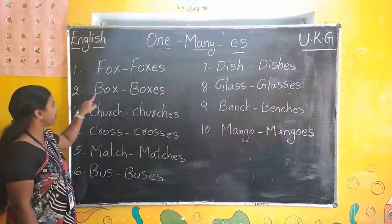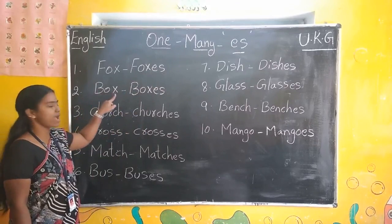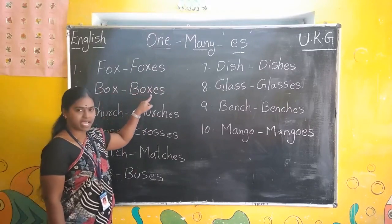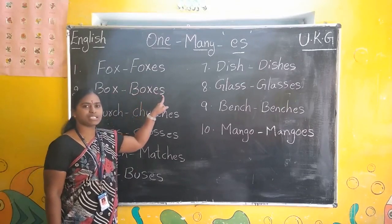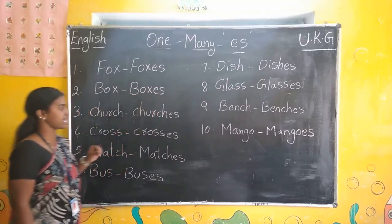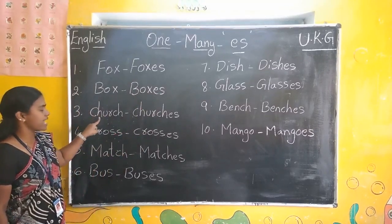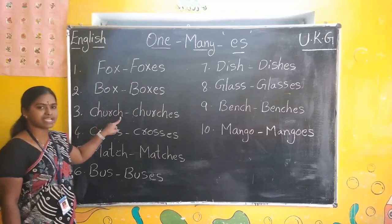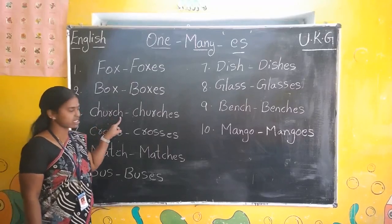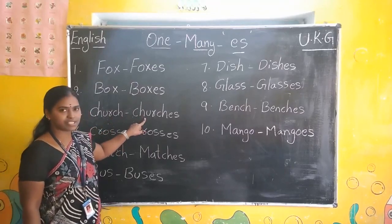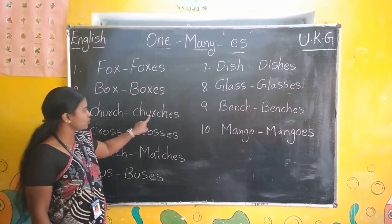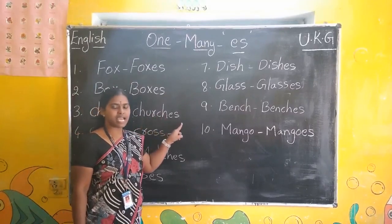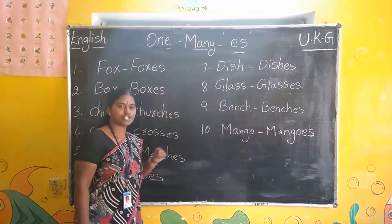Foxes. Boxes. B-O-X. Boxes. Church. C-H-U-R-C-H. CH, U, R, C, H, ES. Churches.